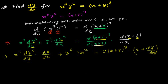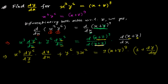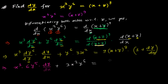Now when we have finished all the differentiation, our next step is to collect all the dy/dx terms to one side. Let me arrange it. We have x³ times 6y⁵ dy/dx, plus y⁶ times 3x², and on the right side it is 9(x+y)⁸ times (1 + dy/dx).